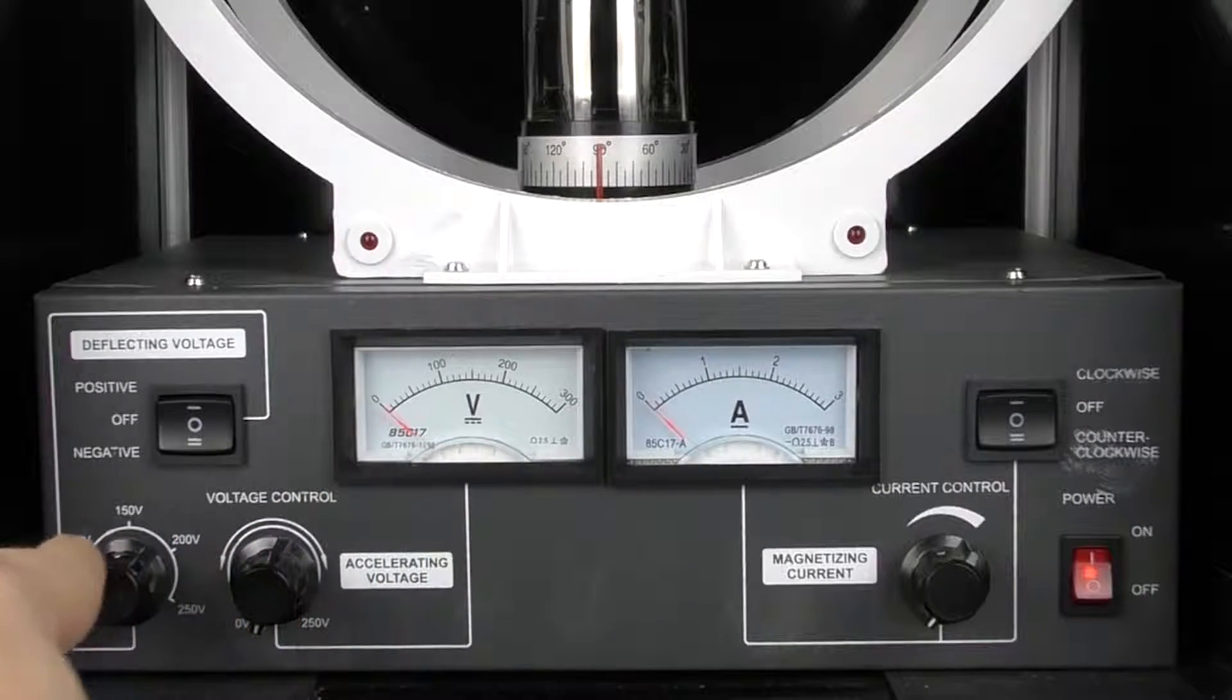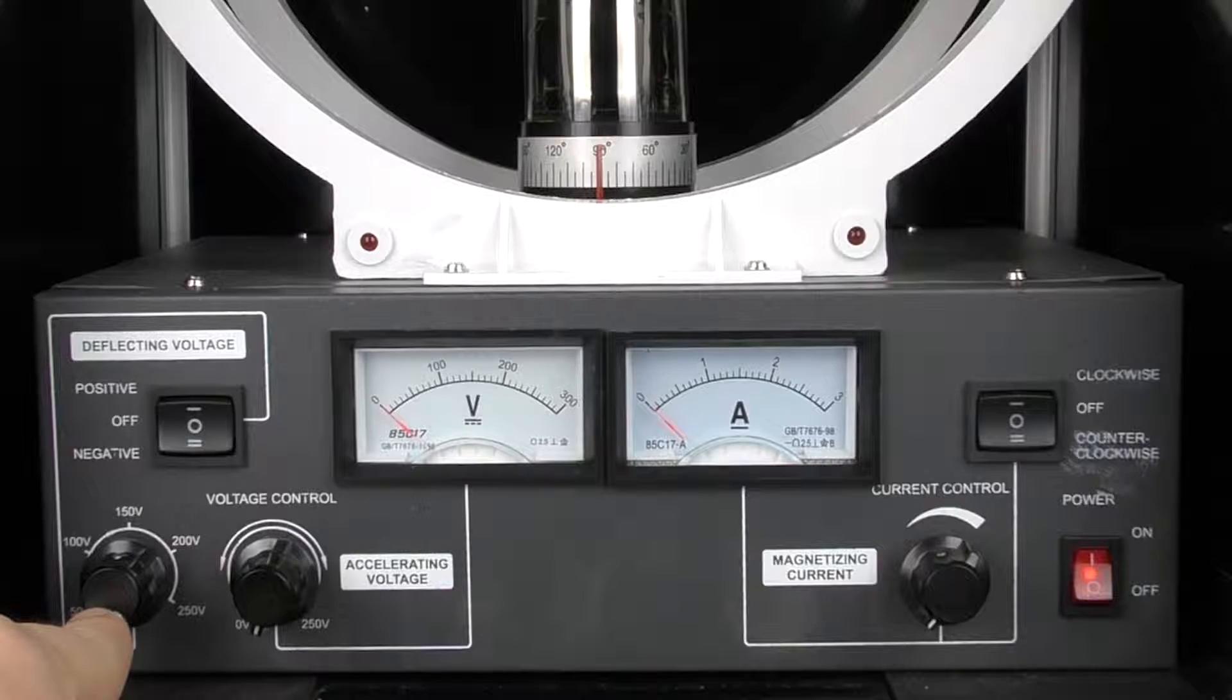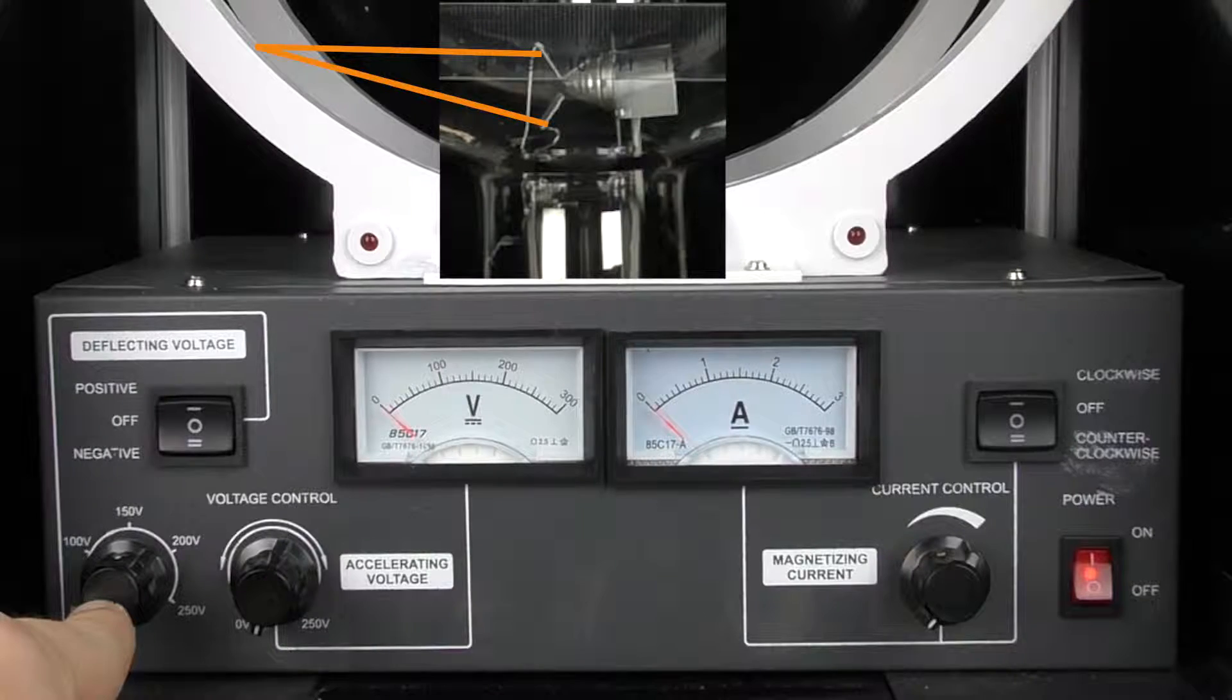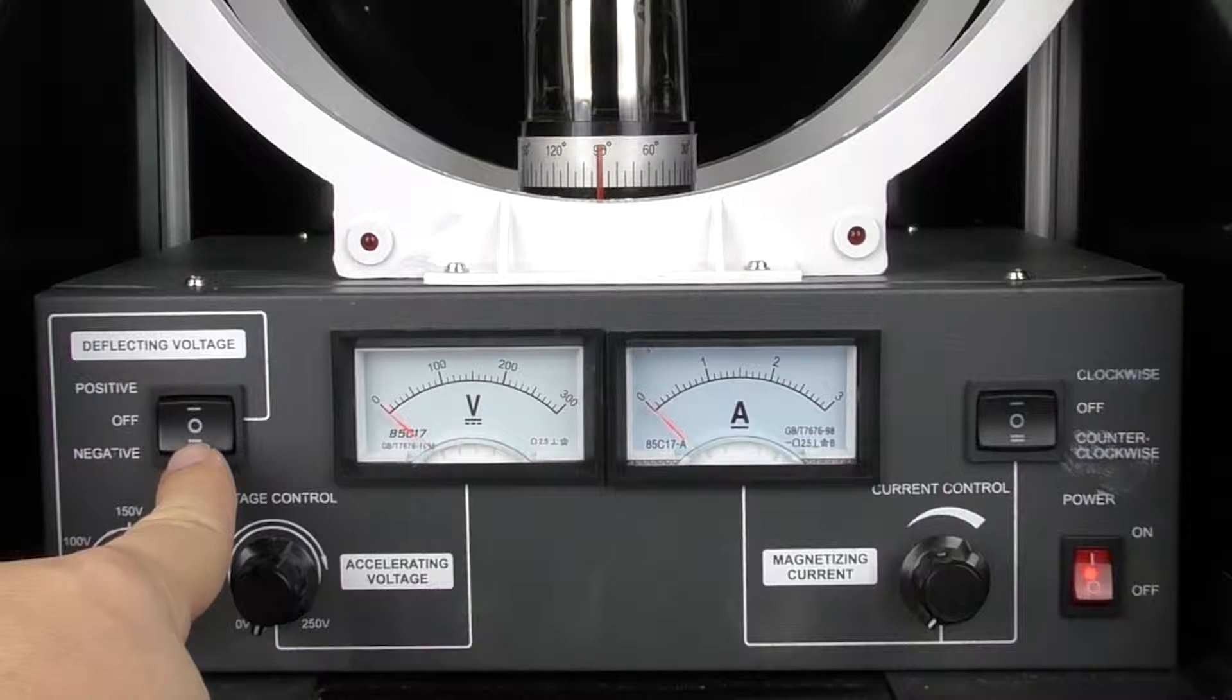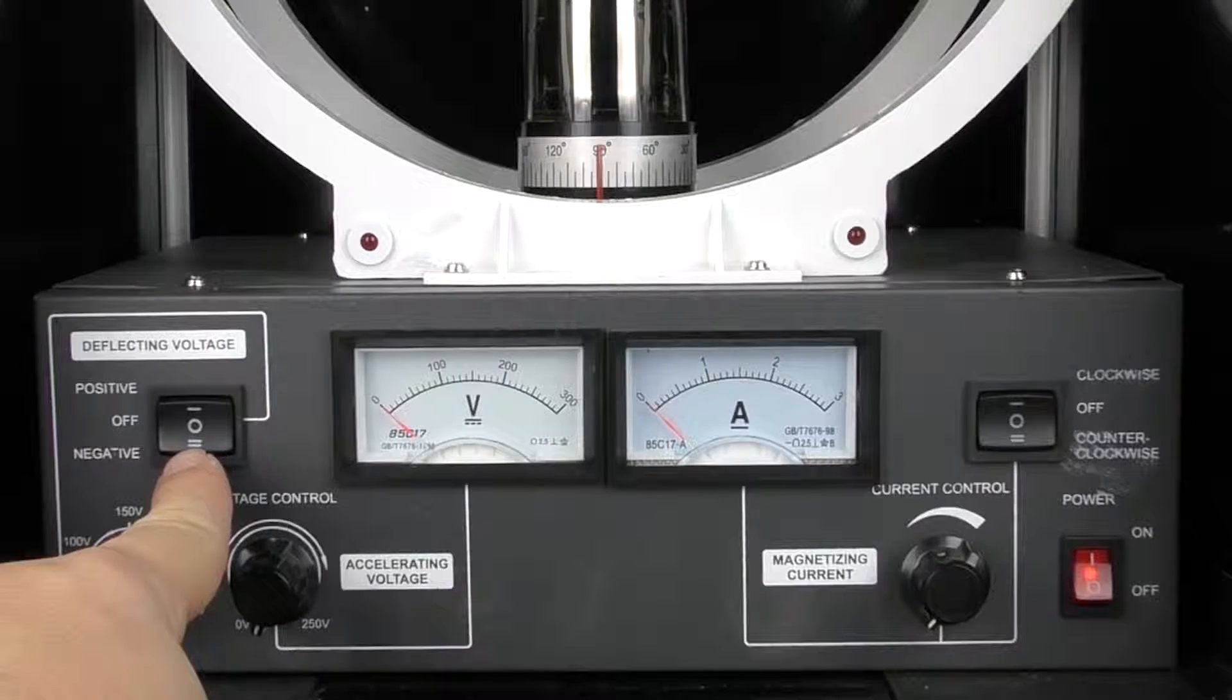For electrostatic deflection, you have a knob for 50 to 250 volts. That allows you to deflect the charge away from these plates. You can also vary the polarity of the plates to demonstrate how the electron path will change.